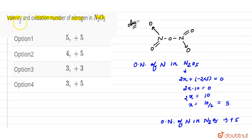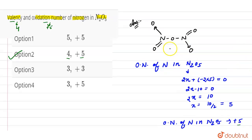Now for the valency — since the nitrogen atom has shared four electron pairs, its covalency is four in the molecule of N₂O₅. Valency, or covalency, is defined as the tendency of an atom to form covalent bonds with another atom or molecule. Here, nitrogen forms one, two, three, and four bonds — four electron pairs.